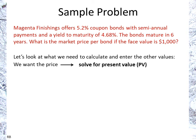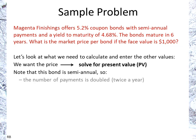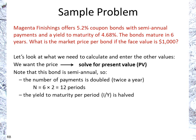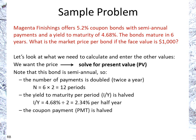We want to find the price, so we're solving for present value. Because it's semi-annual, we double the number of payments: N = 6 × 2 = 12 periods. The yield to maturity per period is halved: I/Y = 4.68 ÷ 2 = 2.34. The coupon payment is also halved: 5.2% × $1,000 ÷ 2 = $26 per period. So we have N, I/Y, PMT, and FV — now we solve for present value.